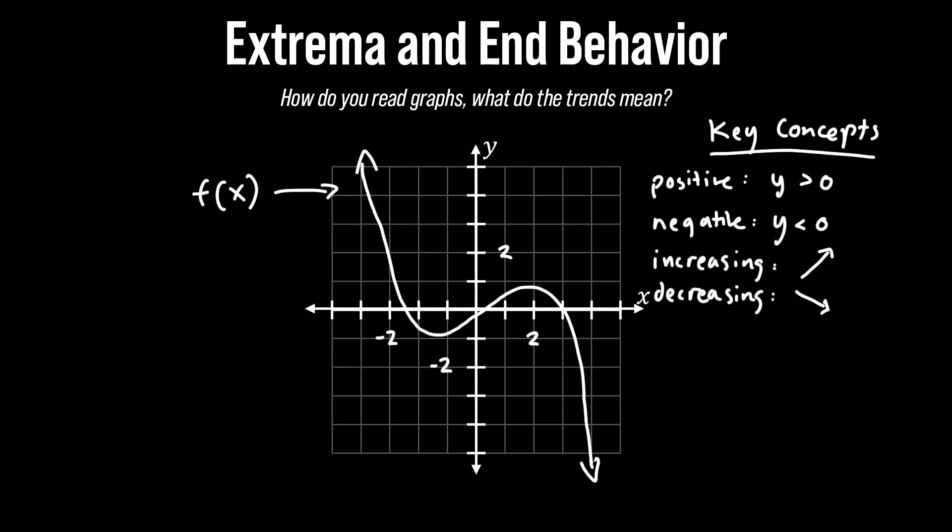Now we have two more concepts which is the relative minimum and relative maximum. The relative minimum describes a point which is locally smallest value on the graph. What does this mean?